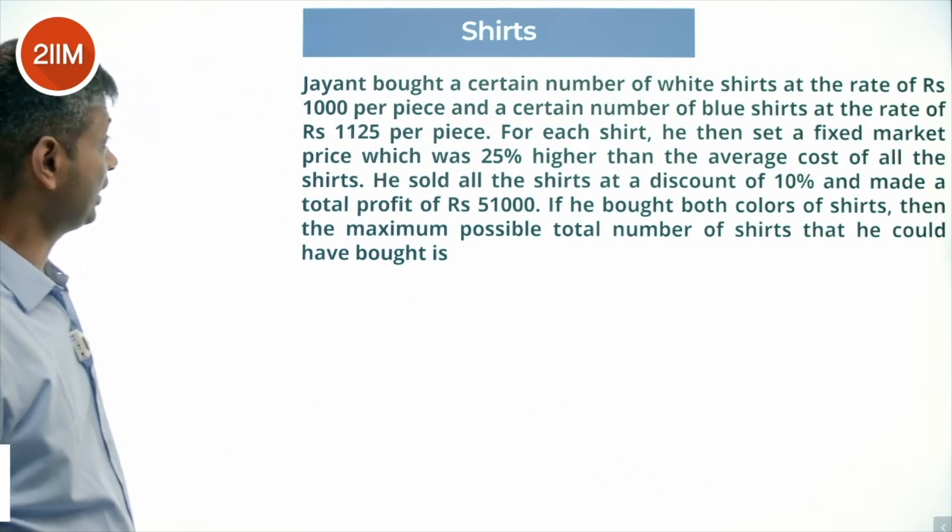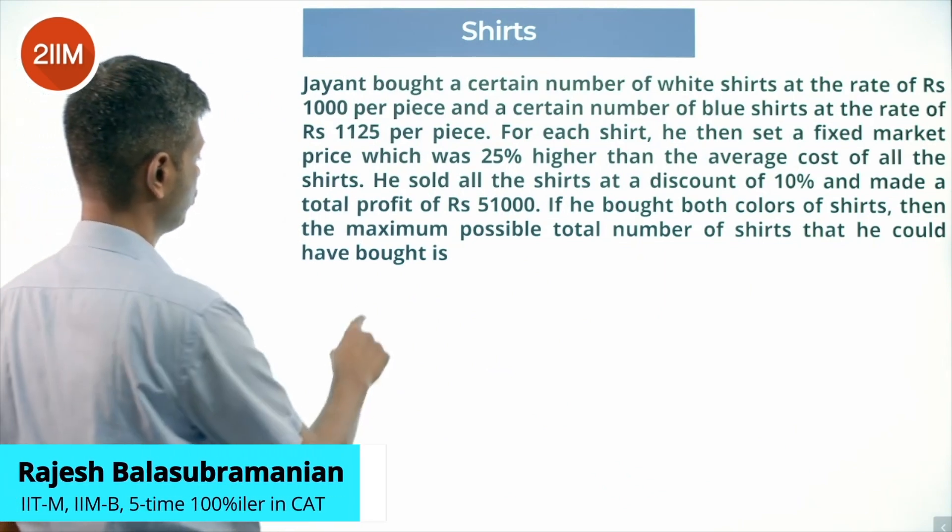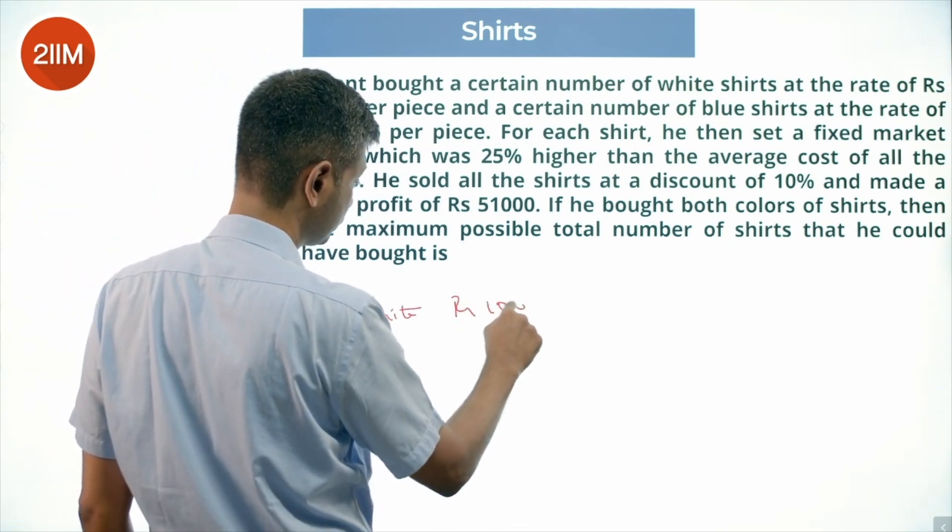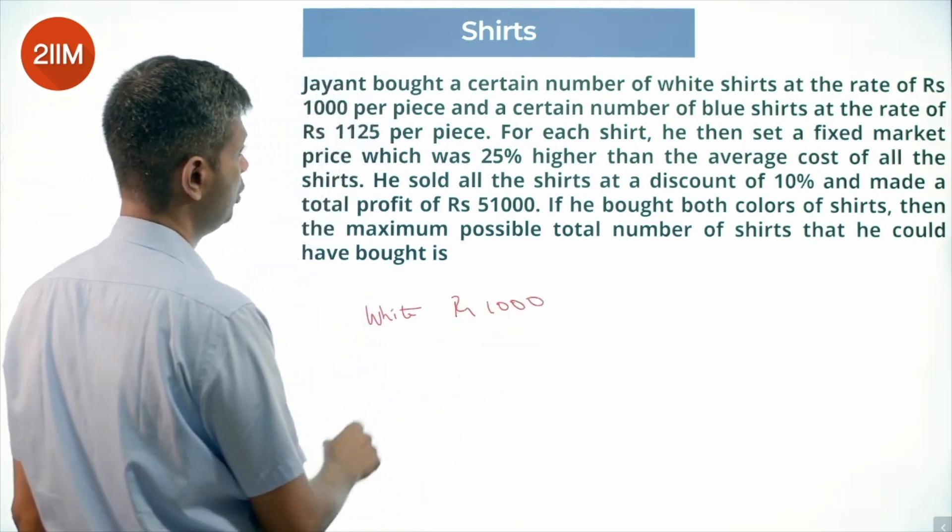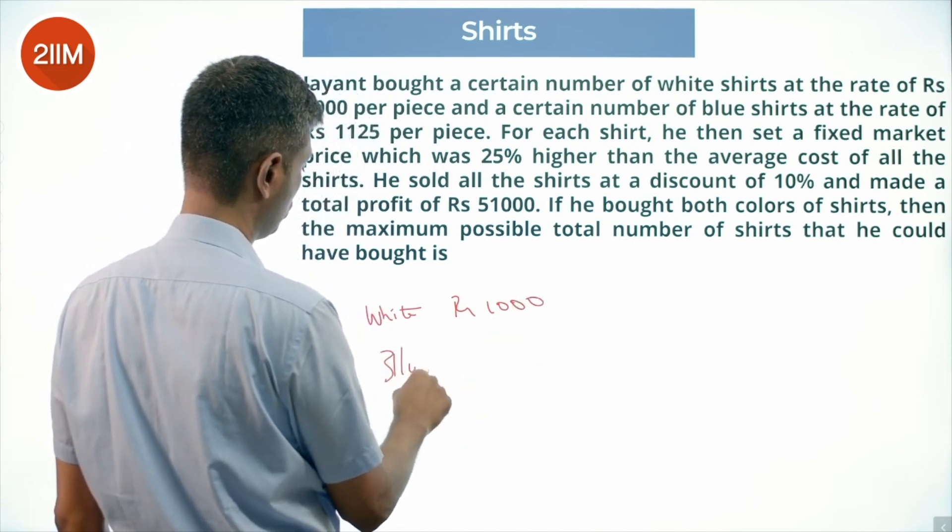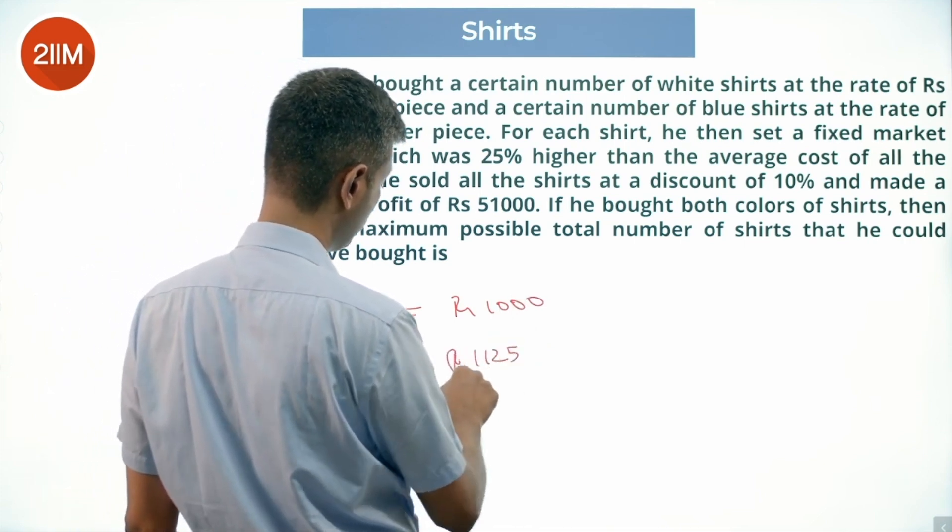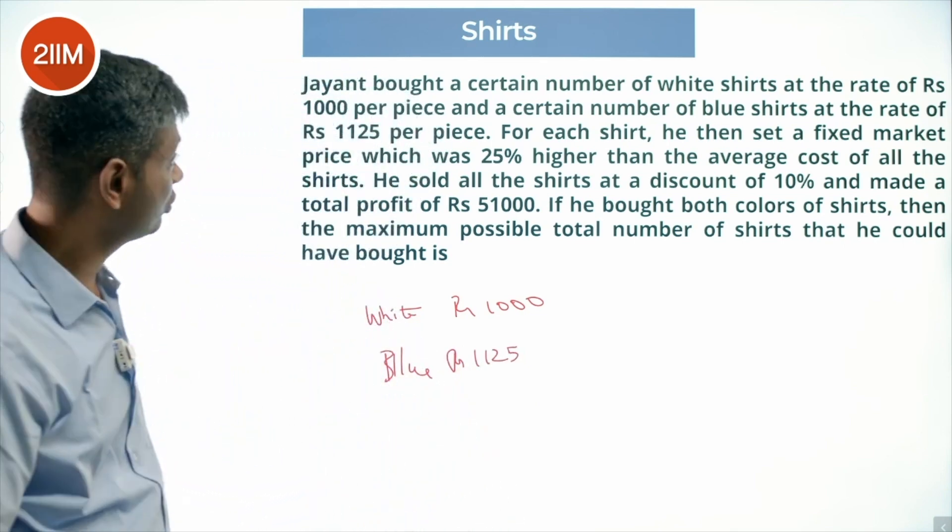Jayant bought a certain number of white shirts at Rs 1000 per piece and a certain number of blue shirts at Rs 1125 per piece. So white costs Rs 1000, blue costs Rs 1125. The ratio is 1000:1125, which simplifies to 8:9.